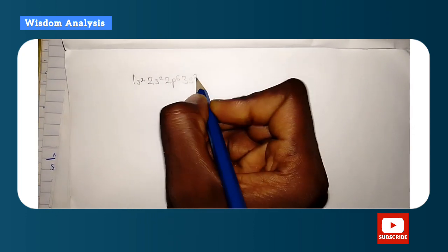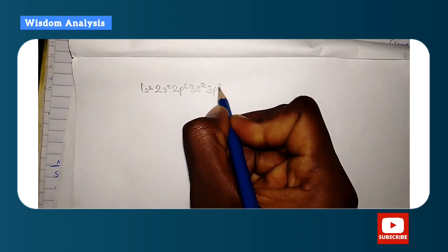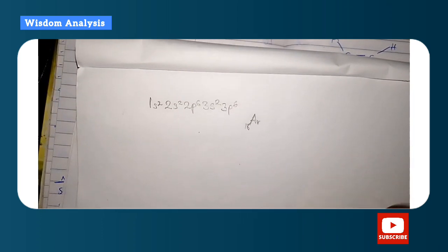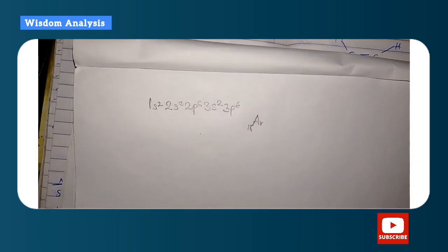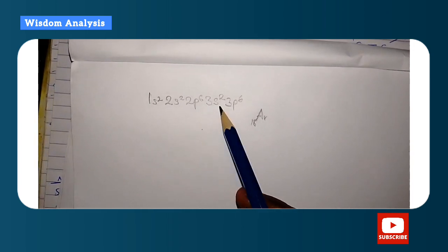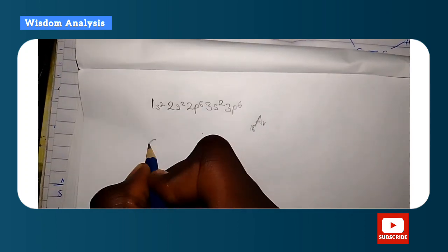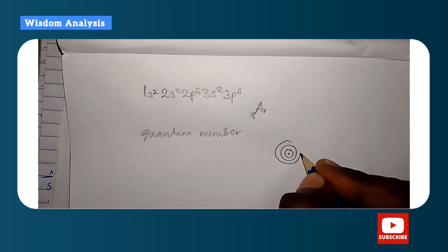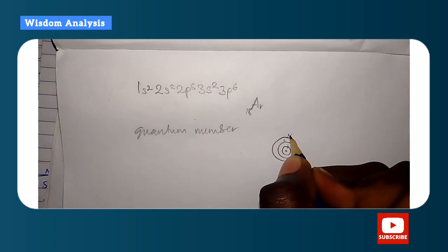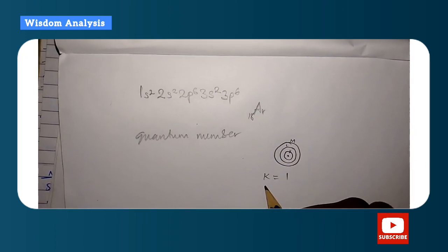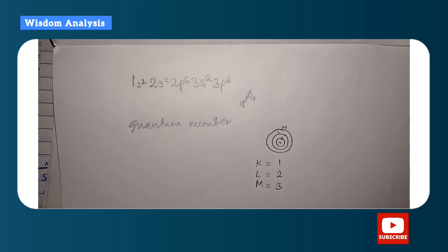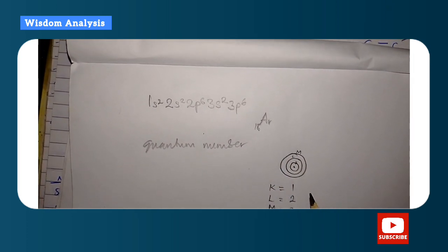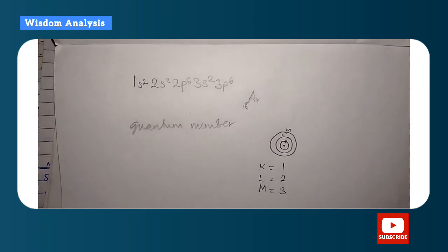For example: 1s², 2s², 2p⁶, 3s², 3p⁶ — that is 18 electrons, which is argon. The numbers 1, 2, and 3 you see here are called the principal quantum numbers. The first shell is K (quantum number 1), the second is L (quantum number 2), and the third is M (quantum number 3), and so on.